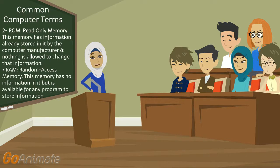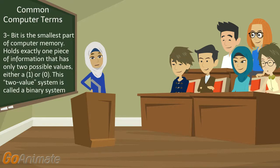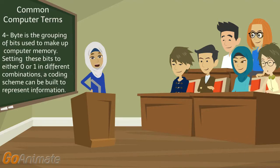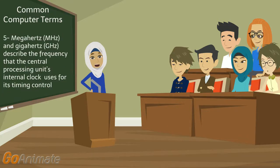Random access memory has no information in it but is available for any program to store information. A bit is the smallest part of computer memory; it holds one piece of information with only two possible values: 1 or 0 — this two-value system is called a binary system. A byte is the grouping of bits used to make up computer memory; setting bits to 0 or 1 in different combinations allows a coding scheme to represent information. The byte is the basic measuring unit for memory or storage capacity. Kilo, Mega, and Giga are prefixes that represent certain multipliers. Megahertz and Gigahertz describe the frequency the CPU's internal clock uses for its timing control.